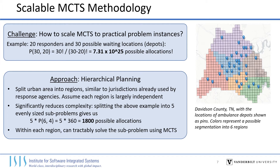Our approach to scale up MCTS is hierarchical planning. The idea is to split the urban area into regions and then solve the planning problem separately for each region. This significantly reduces the overall complexity. If we split the earlier example into five evenly sized subproblems, it reduces the complexity by 22 orders of magnitude, allowing us to tractably solve the problem using MCTS.